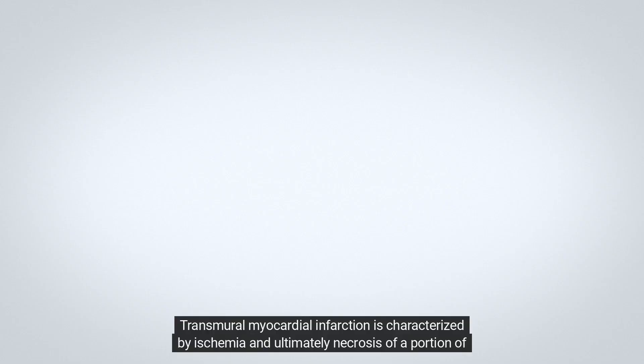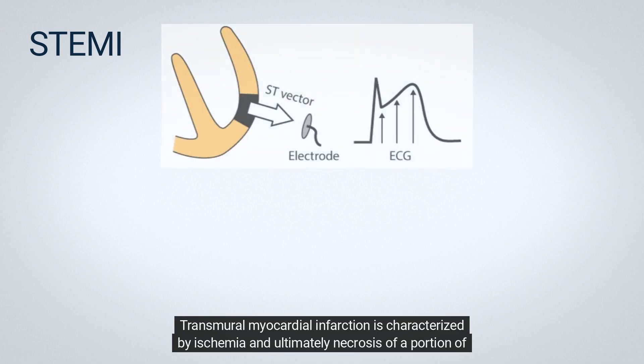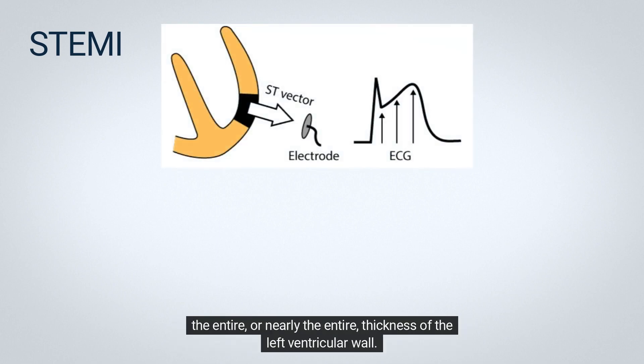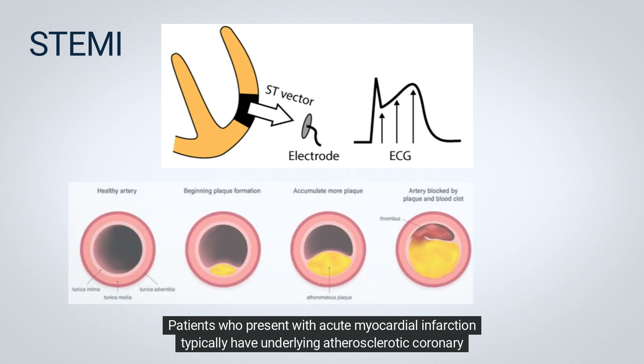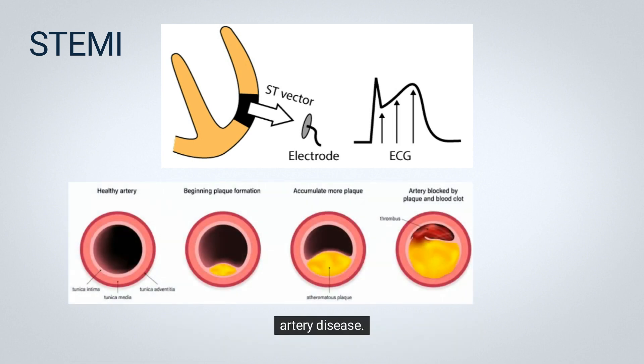Transmural myocardial infarction is characterized by ischemia and ultimately necrosis of a portion of the entire, or nearly the entire, thickness of the left ventricular wall. Patients who present with acute myocardial infarction typically have underlying atherosclerotic coronary artery disease.